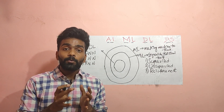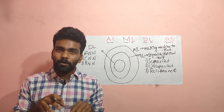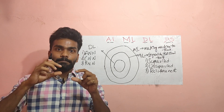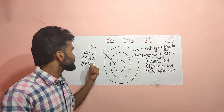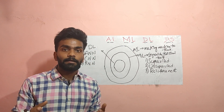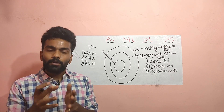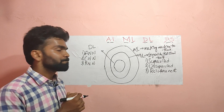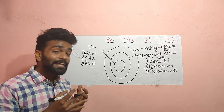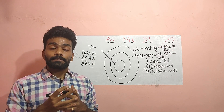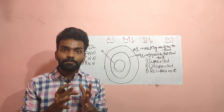In ANN we give number-type data — the data will be in table form. In CNN we give image-type data; for example, if you want to classify an image as a dog or cat, images are given directly to the CNN model. In RNN, the data is time-series kind of data.